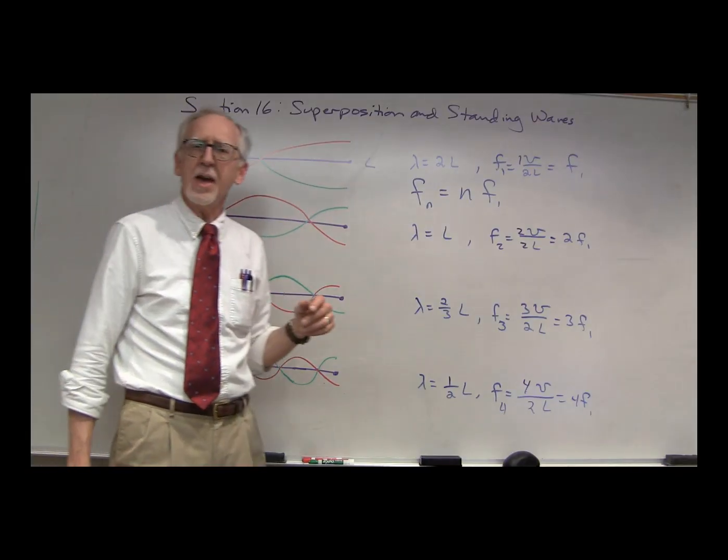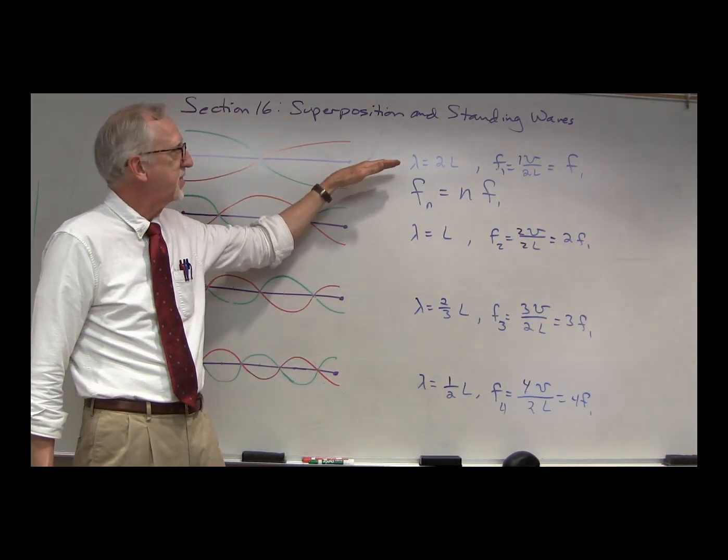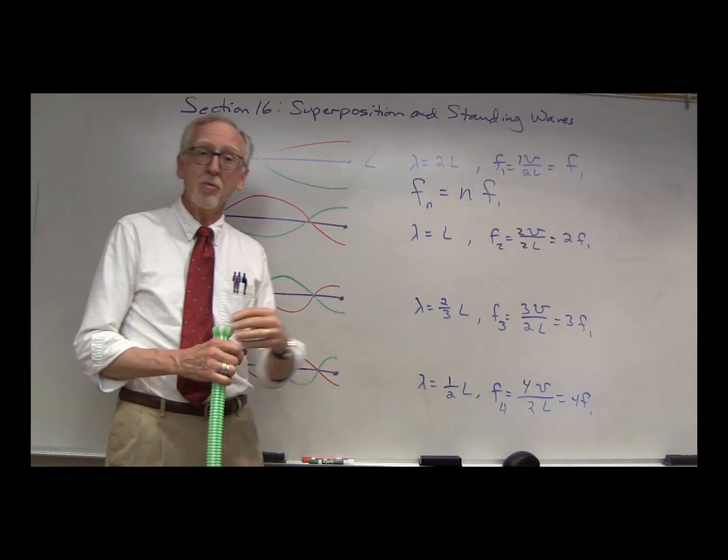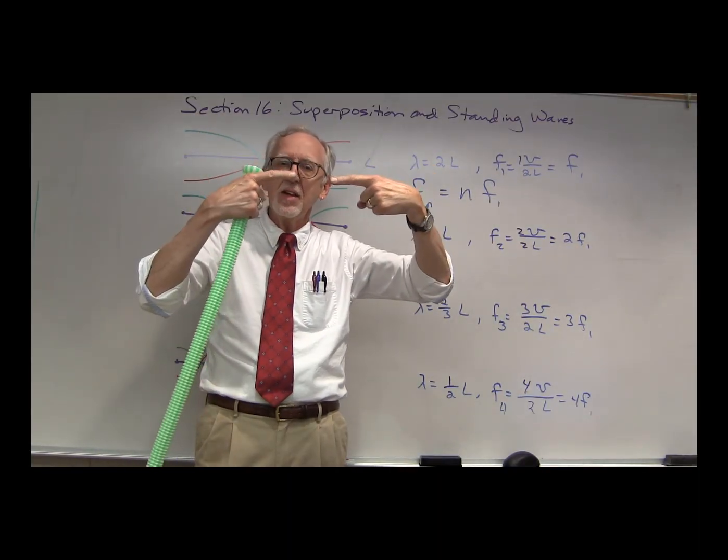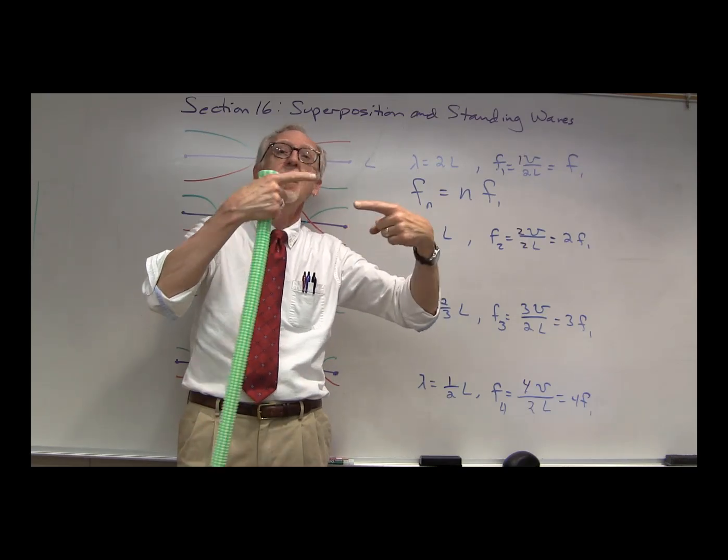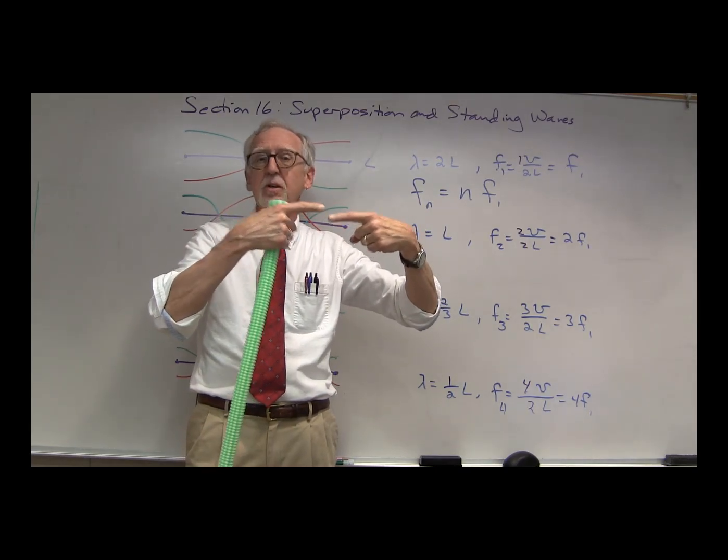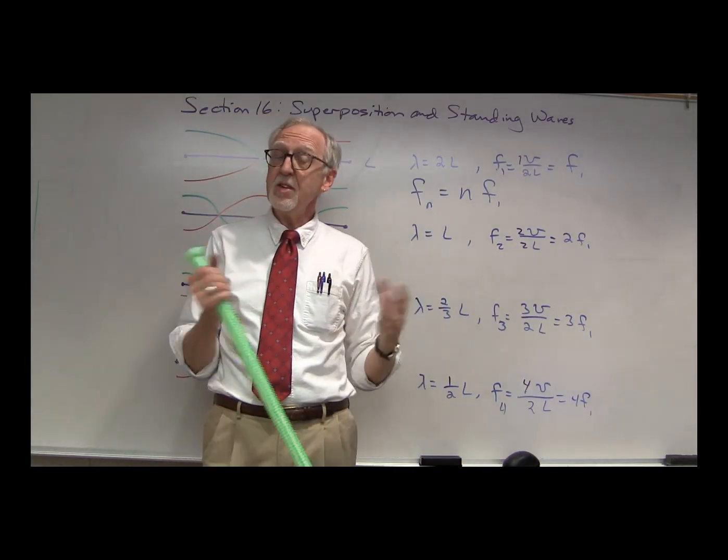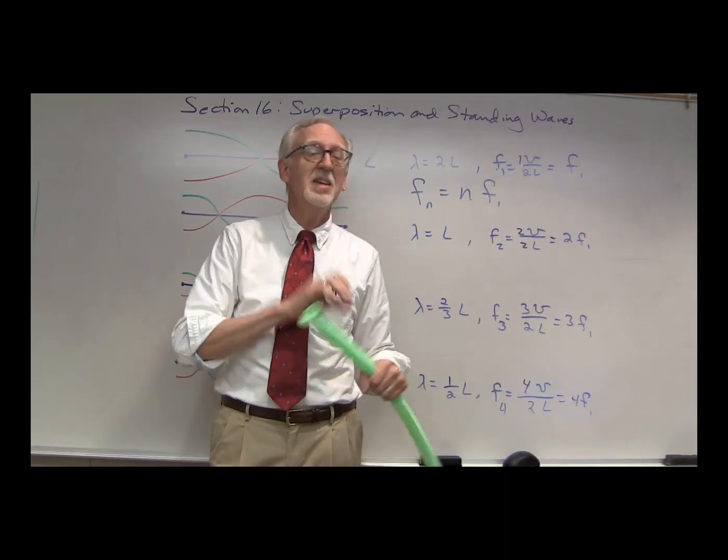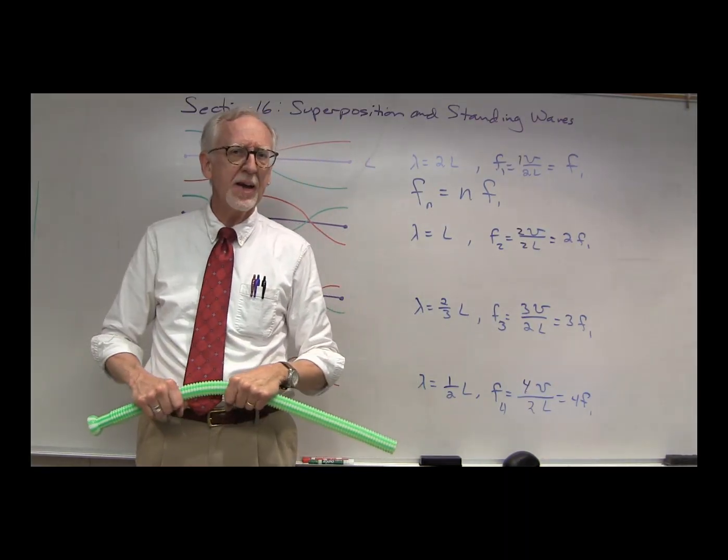So far we have just been looking at what happens when waves with the same wavelength combine. Remember we started out with the two waves coming together with the same wavelength. And then we saw we had points that interfered constructively, points that interfered destructively. What if we have waves with different wavelengths? Maybe slightly different wavelengths. Let's take a look at what happens in that case.